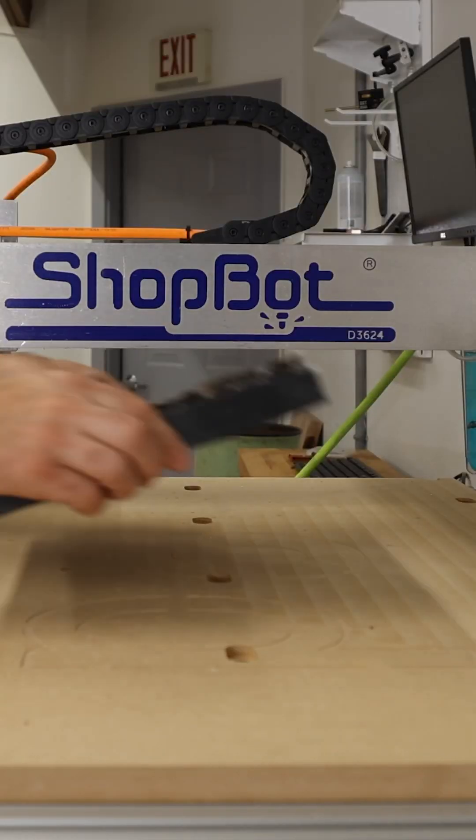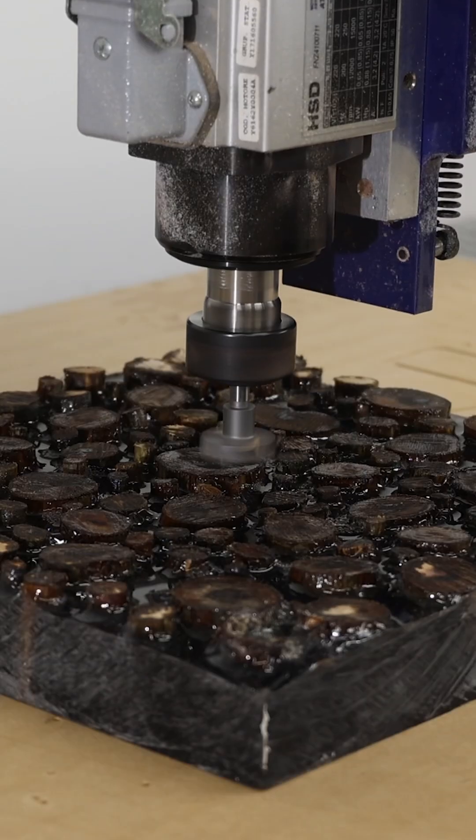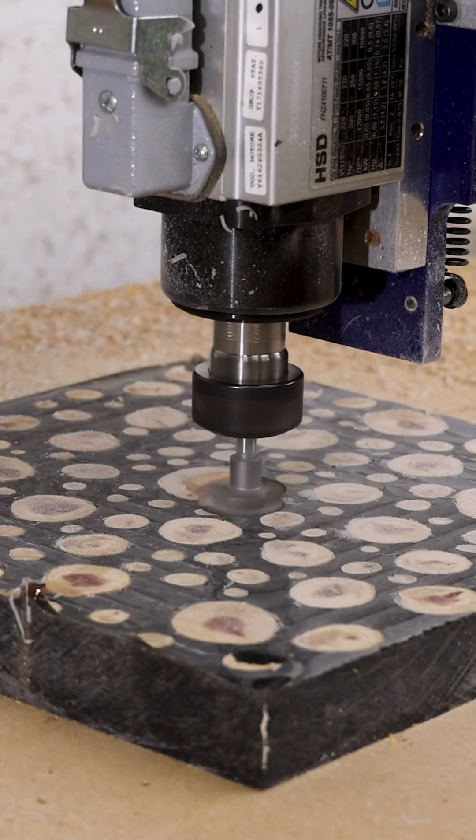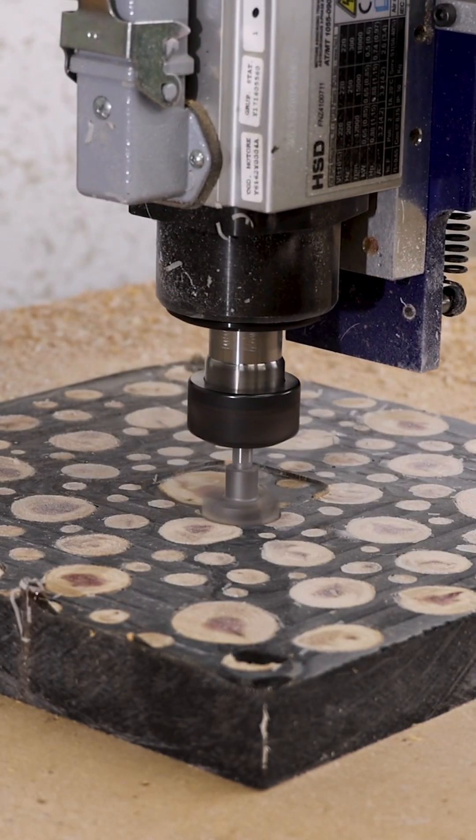After it cures, we'll take it over to the ShopBot and flatten one side using a surfacing bit with a 1-inch cutting diameter.